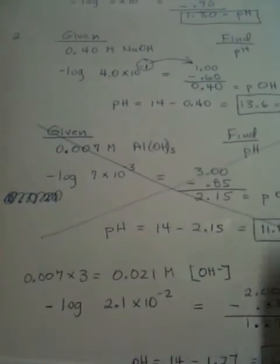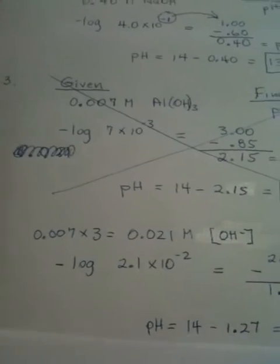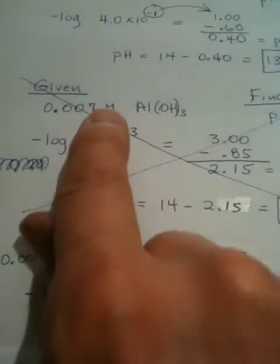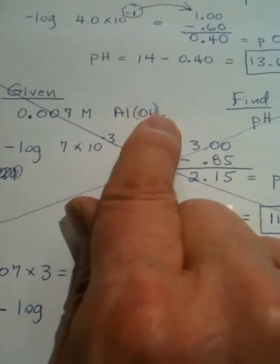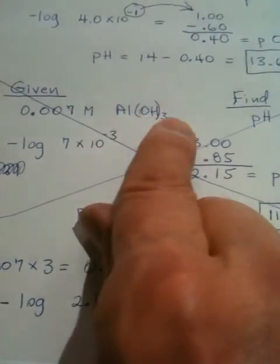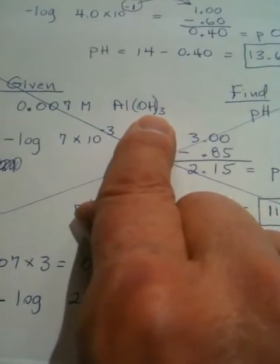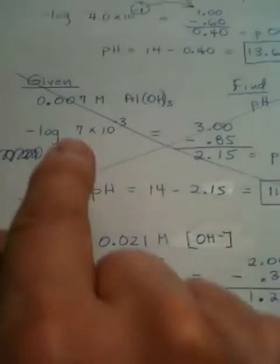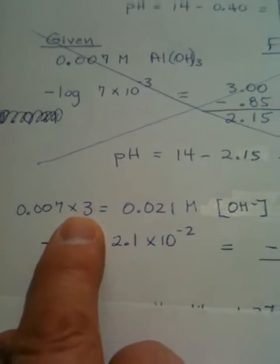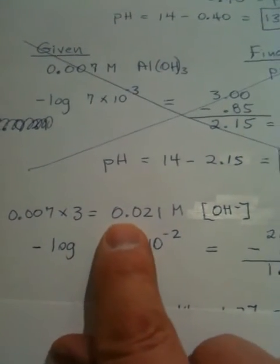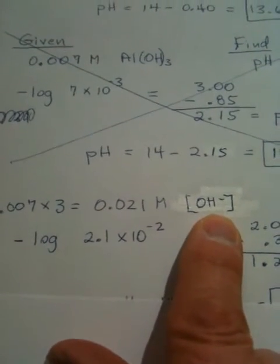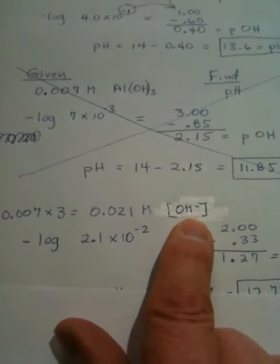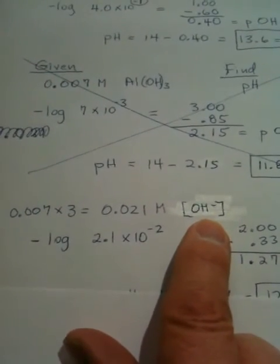So, this is the way we should do the problem. We take three times the concentration because each of these gives us three of these. One of the aluminum hydroxides carries with it three hydroxide ions. So, we have to take whatever the concentration is and multiply it by three. That's how we come up with 0.021 molarity of the hydroxide ion. So, now we start with the correct numbers, and this should work out okay.